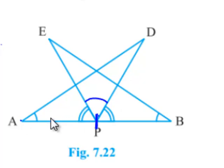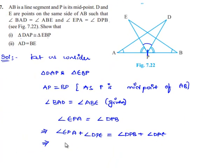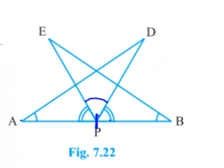This simplifies to show that angle DPE equals angle APB.